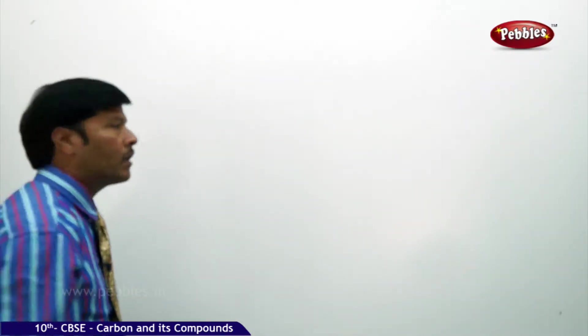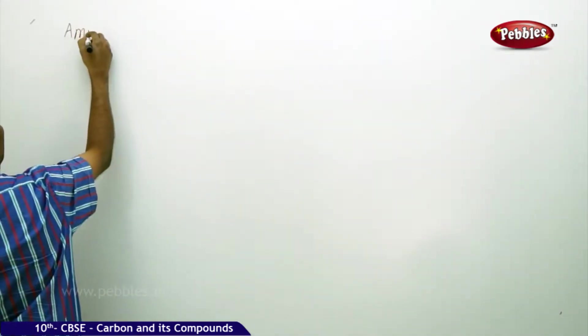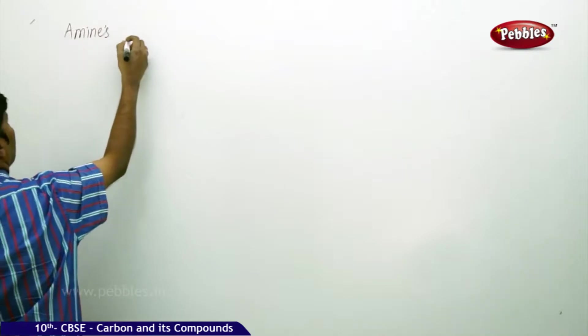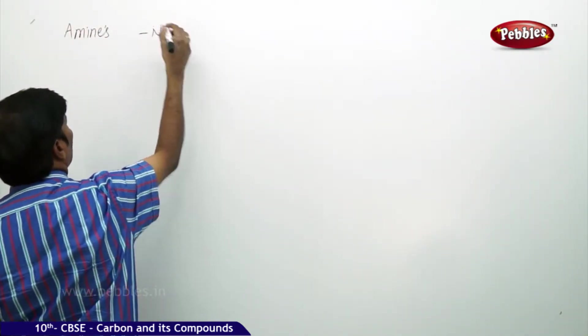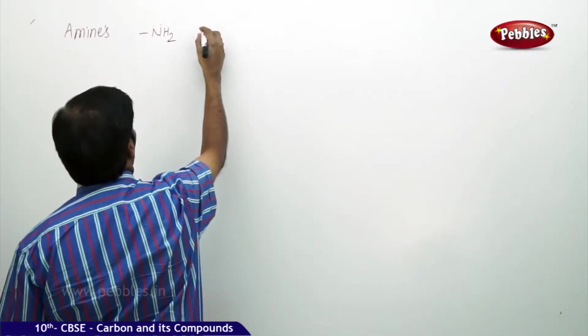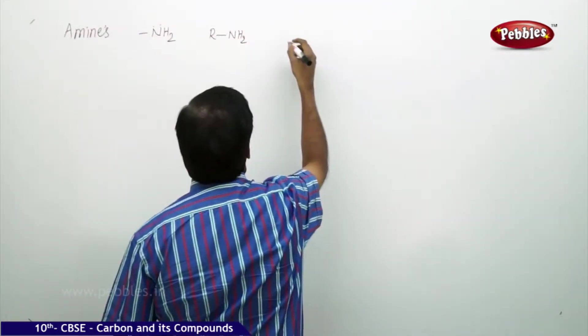We'll go for the next part of the discussion, the next part of the class of organic compounds. Let us assume that the compound is amines. Functional group: NH2. General formula is R-NH2.